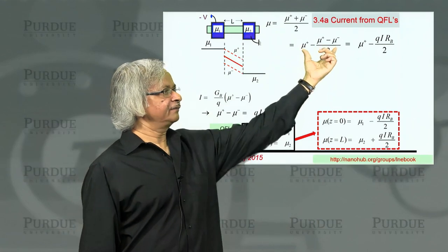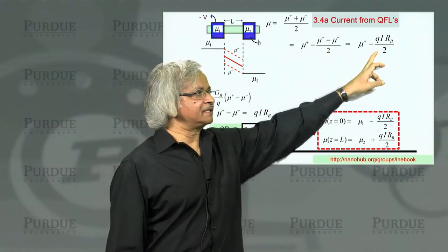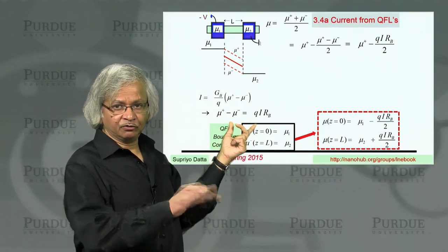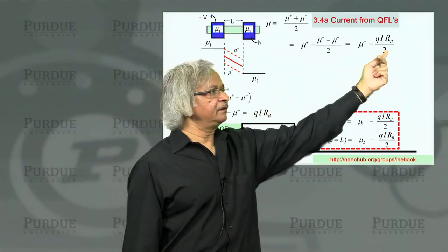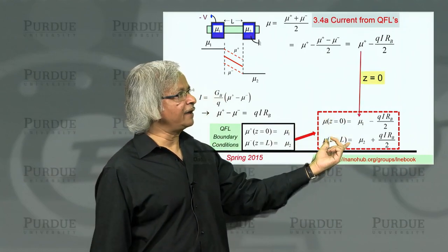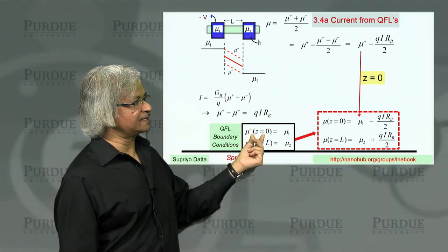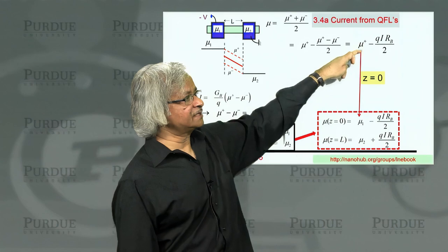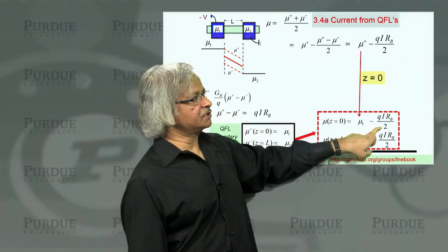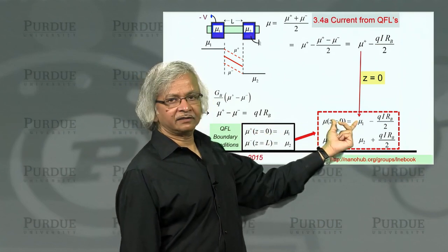This can be written like this. And once you have this, you could take this quasi-Fermi level difference and express it in terms of the current — making use of the relation we just talked about, which we haven't yet proved but we'll come to that. If you accept it, you see that it could be written in this form, and we immediately have the boundary condition we are looking for. Because if you look at z equals zero, the quasi-Fermi level boundary condition tells us that mu plus at z equals zero must be mu 1. So this boundary condition automatically gives you that, in just one line.